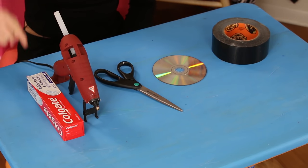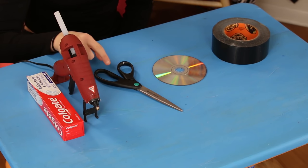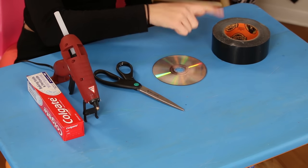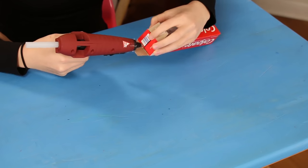For this you'll need an empty toothpaste box, hot glue, scissors, an old CD, and some black tape. Glue the open end of the box back together.